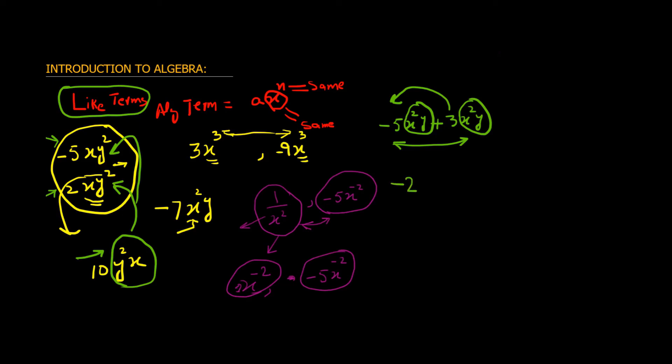So we just add minus 5 and 3, which is minus 2. And I will also explain this addition and subtraction of signed numbers later in this course. But for the moment, you can simply say that subtract 3 from 5 and put the sign of the bigger number. So minus 2x square y would be the answer. So only like terms can be added or subtracted.